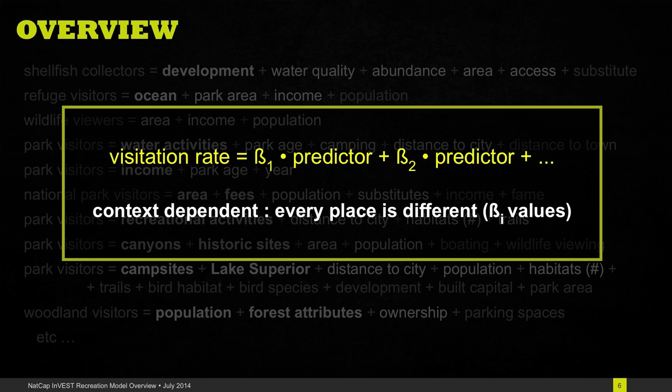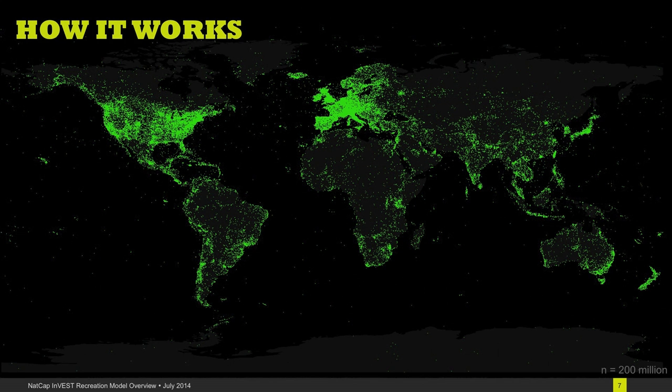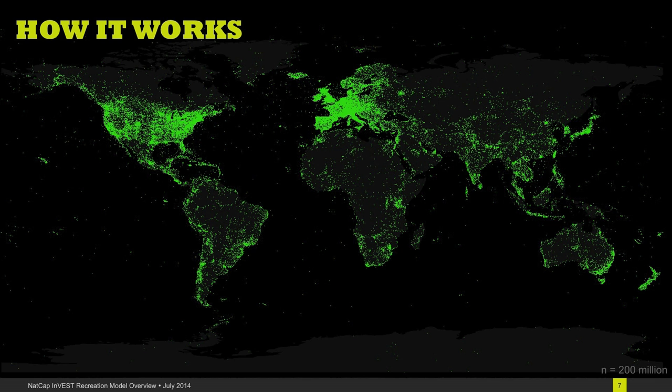At the Natural Capital Project we've been looking into proxy data that we can use to measure visitation to any place, and we've discovered that the number of photographs that people take and post to the online website Flickr are a good substitute for data on visitation to any particular site.